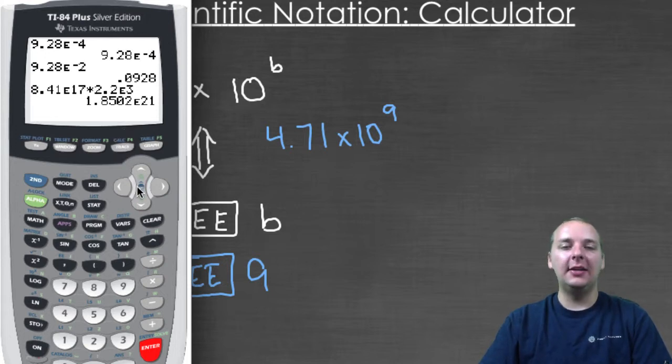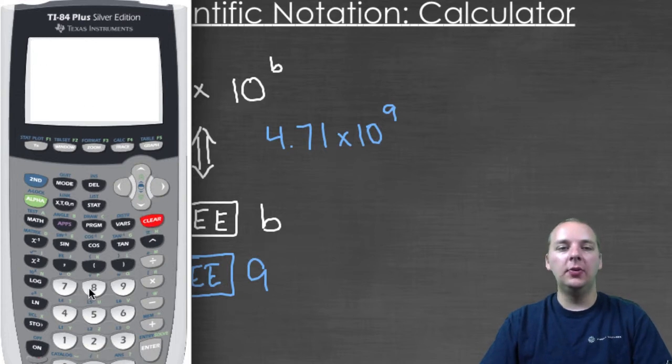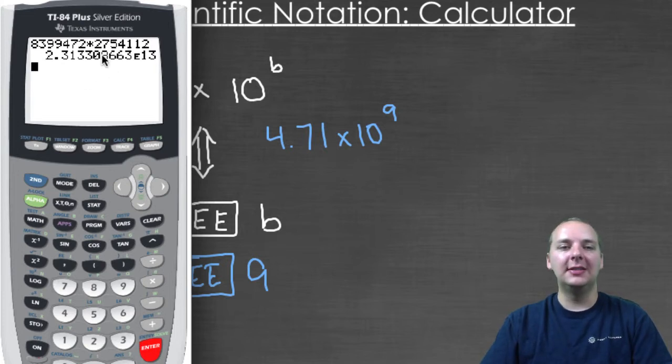Now sometimes you'll get scientific notation as an answer. Let's say you had to do eight million three hundred and ninety nine thousand four hundred and seventy two, times two million seven hundred and fifty four thousand one hundred and twelve, or something like that. You multiply these two massively big numbers, and look at the way that it expresses its answer. It says two point three times ten to the thirteen.